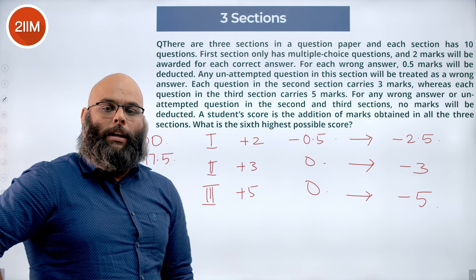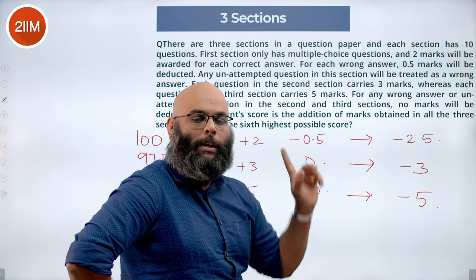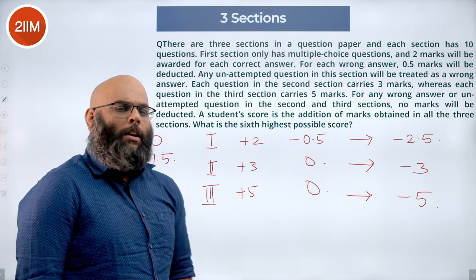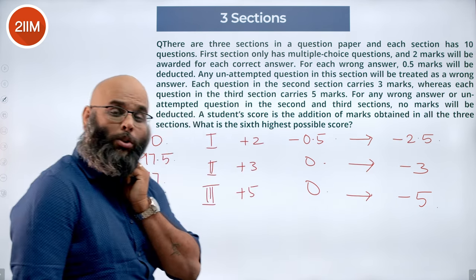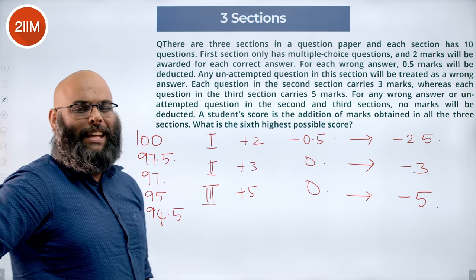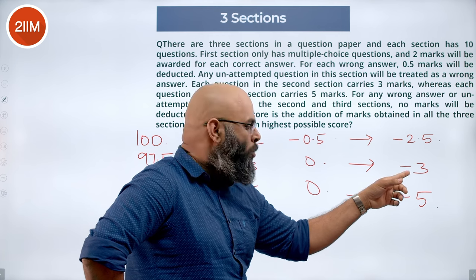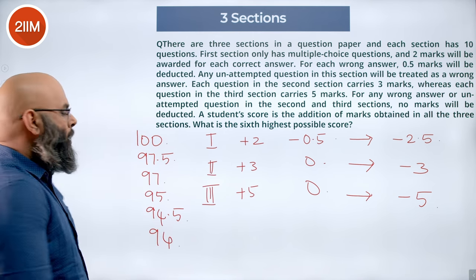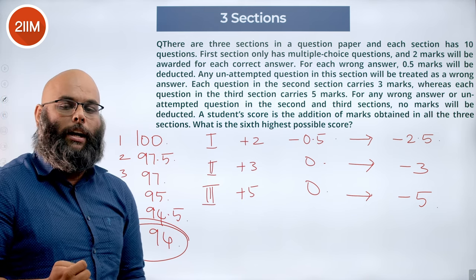The next least mark to miss: one question wrong in section 1 and one in section 2, losing 5.5 marks — so the fifth highest is 94.5. For the sixth highest, which combination loses just more than 5.5? A student losing two questions in the second section loses 6 marks, giving 94. So the ranking is: 1st=100, 2nd=97.5, 3rd=97, 4th=95, 5th=94.5, 6th=94. The sixth highest possible score is 94. The answer is option B.